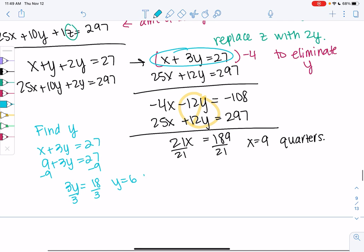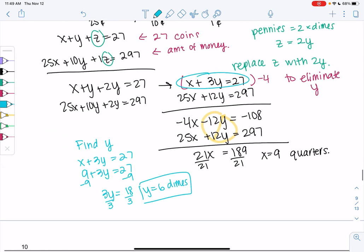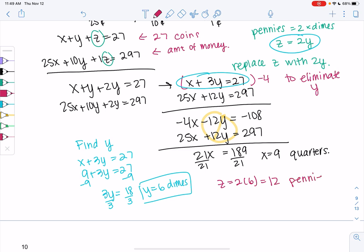And then we have multiple equations, your choice. X plus Y plus Z is 27, or I know Z is 2 times Y. So Z would be 12 pennies. And that's our solution. 9 quarters.